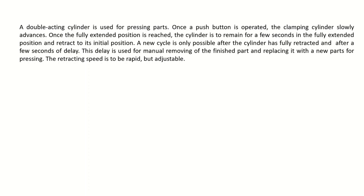The clamping cylinder slowly advances, which means in this specific circuit we would have a throttle check valve to control the speed of the double acting cylinder. Once the fully extended position is reached, the cylinder is to remain for a few seconds in the fully extended position. This means when the piston is in that specific condition, we would have a certain amount of delay — and from that we can easily understand this circuit needs to use a time delay valve.